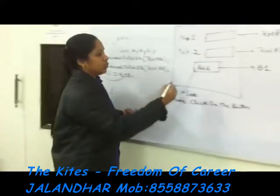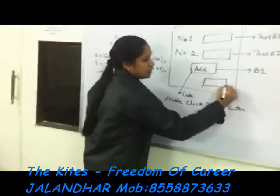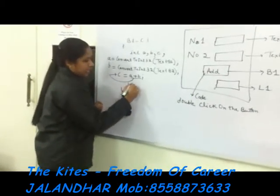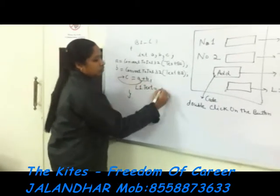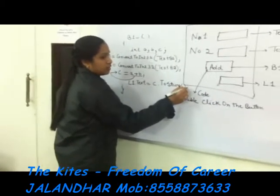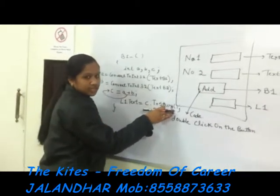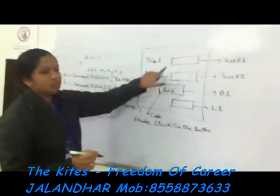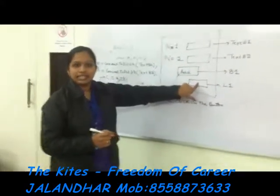In order to print the value of C — that is the result — we need to take a label. Let's say this is our label, a simple label, and its name is N1. What we do is, we write N1.Text is equal to C.ToString(). It will take C's value, convert it into a string, and assign it to the label. Now you put your first value here, second value here, then click the submit button, and it will show you the result on the label.